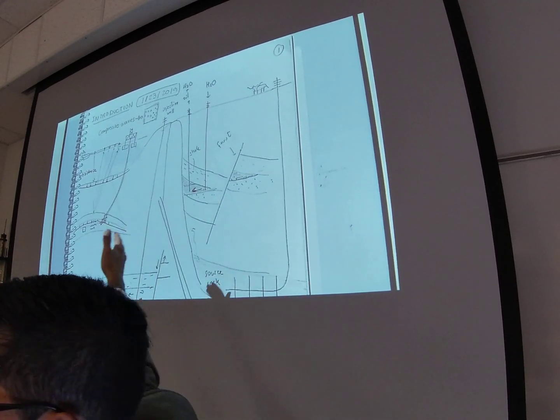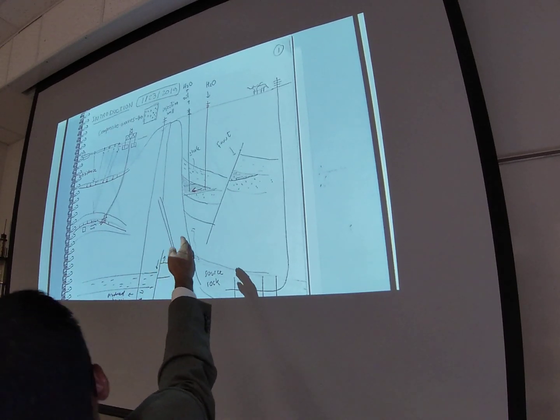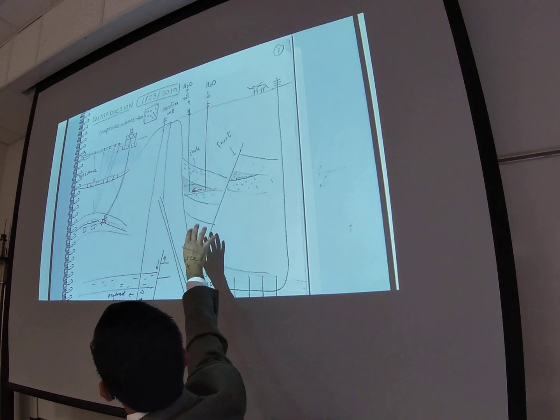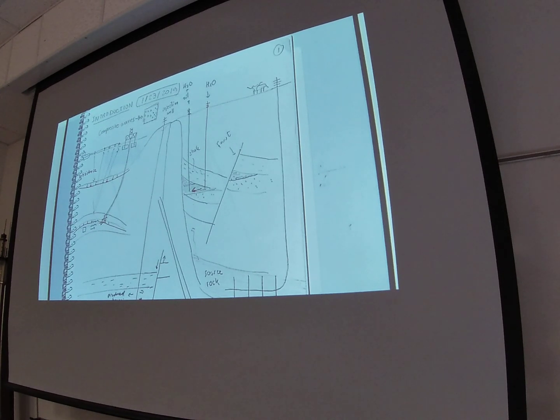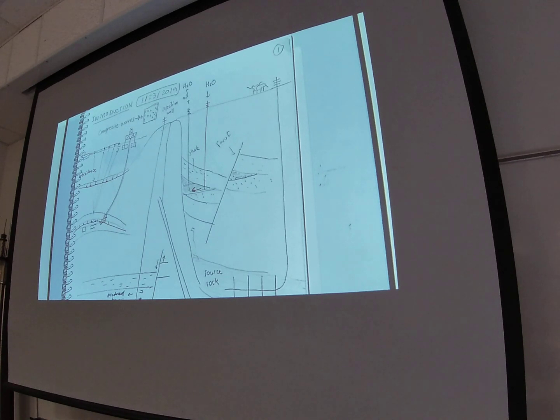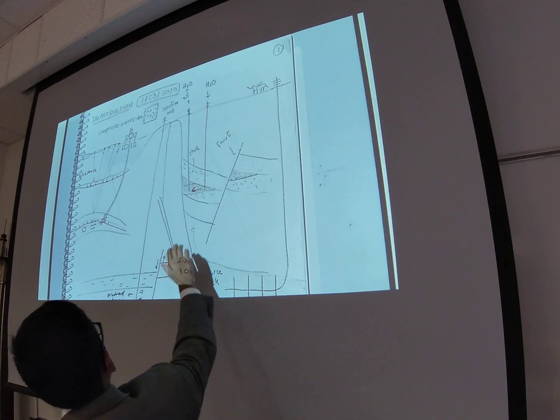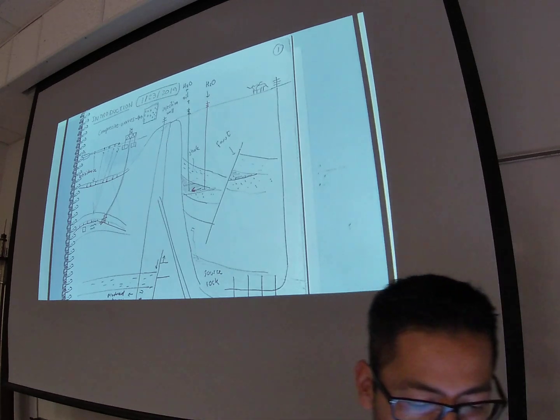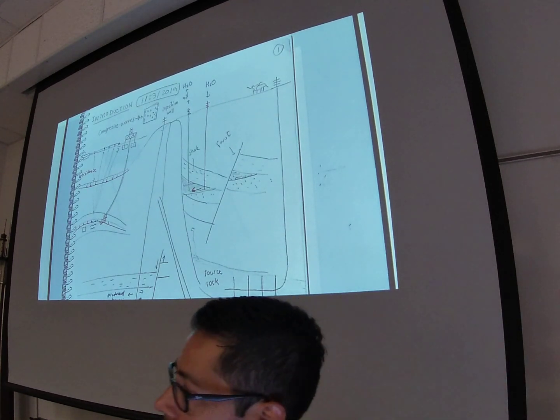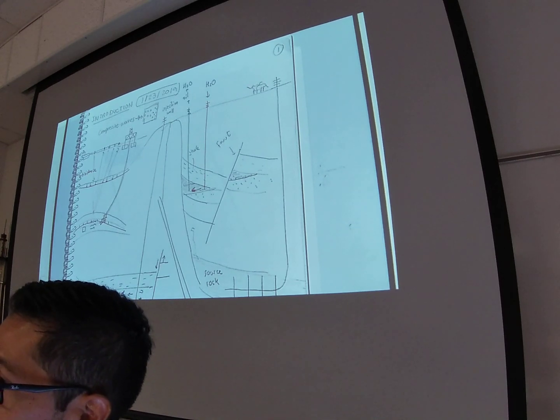And also, when we produce a reservoir, we're compacting the reservoir. And that compaction is also a geomechanical problem. Of course, when we fracture, that depends on geomechanics. But also when we get produced water or backflow water, what we do with that water has to do a lot with geomechanics. Are you guys aware of the induced seismicity in Oklahoma? That was caused by injection of backflow water and produced water from EOR.